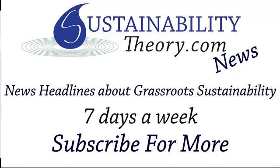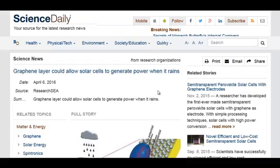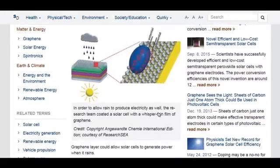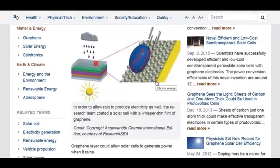Hello, Carl here with Sustainability Theory News. We're over at Science Daily, and they have researchers in China who have put a thin layer of graphene onto the surface of a solar cell.